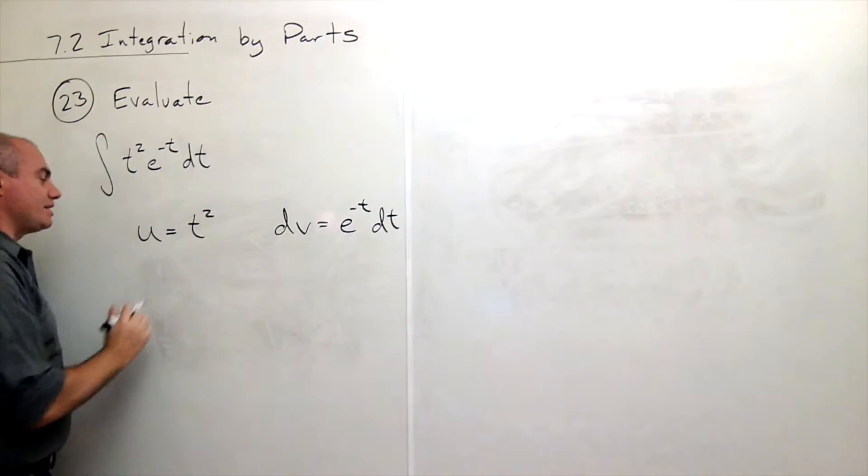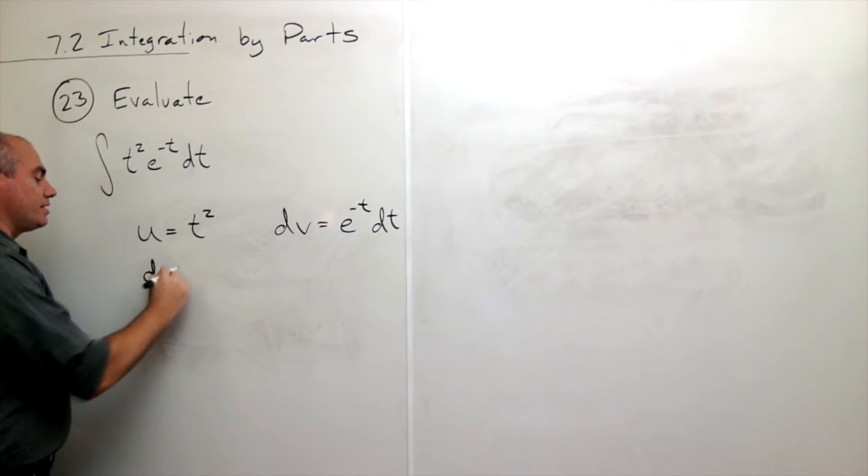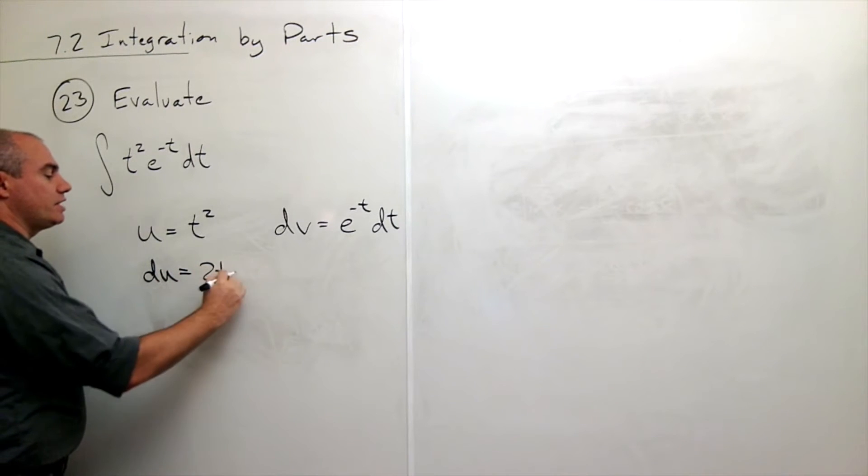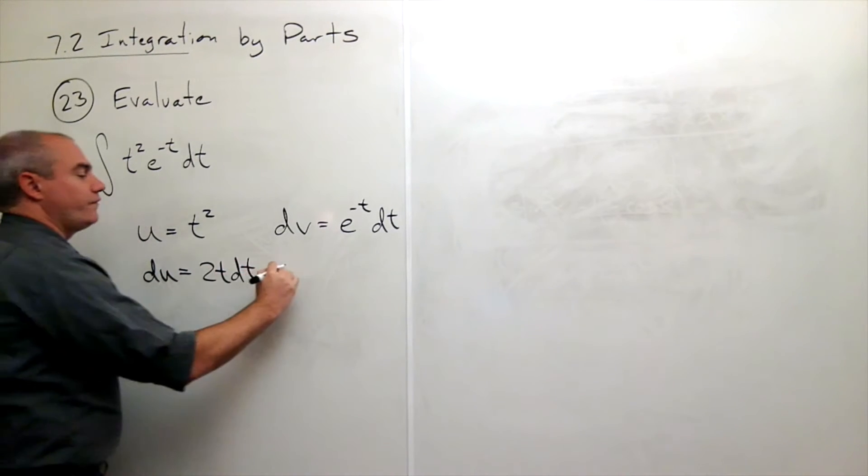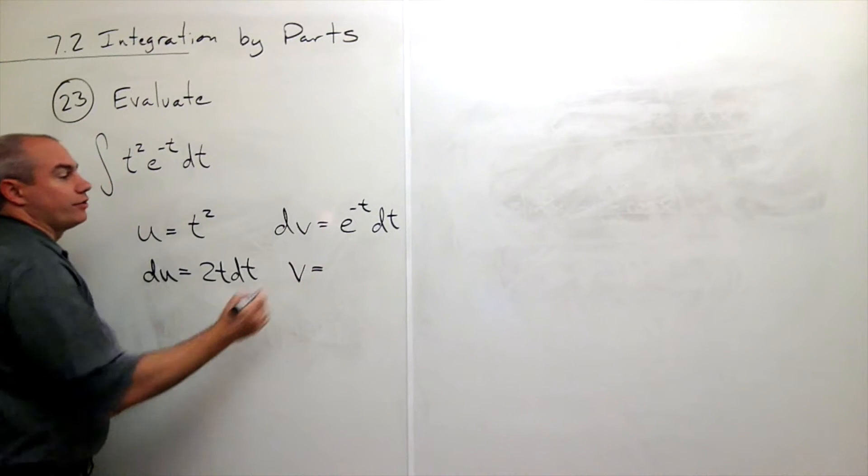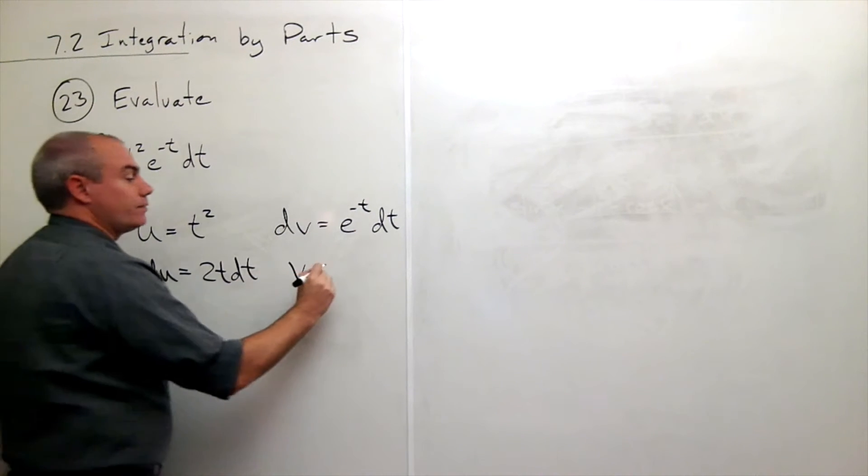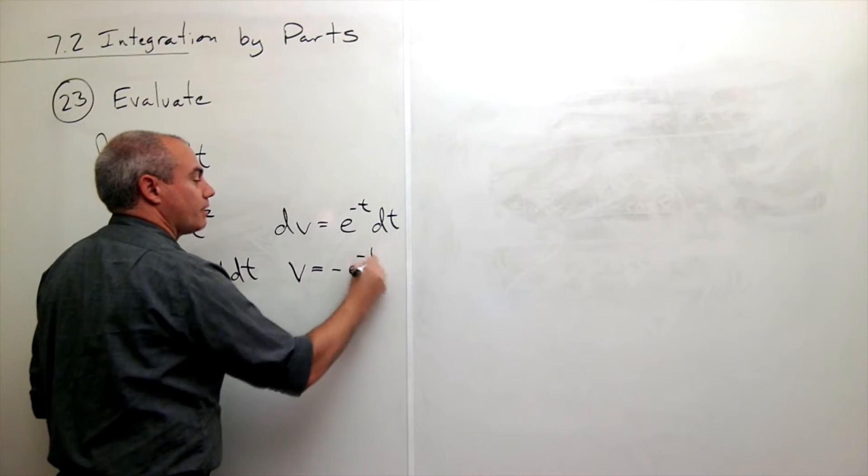So now that I've chosen my u and my dv I can say that du is 2t dt and v is the anti-derivative of e to the negative t which is minus e to the minus t.